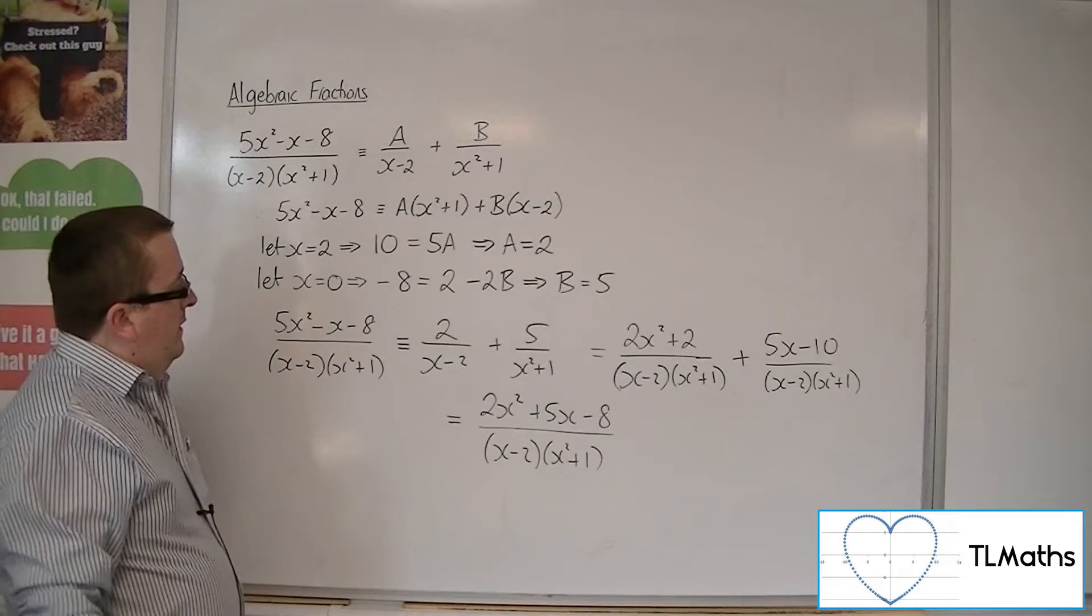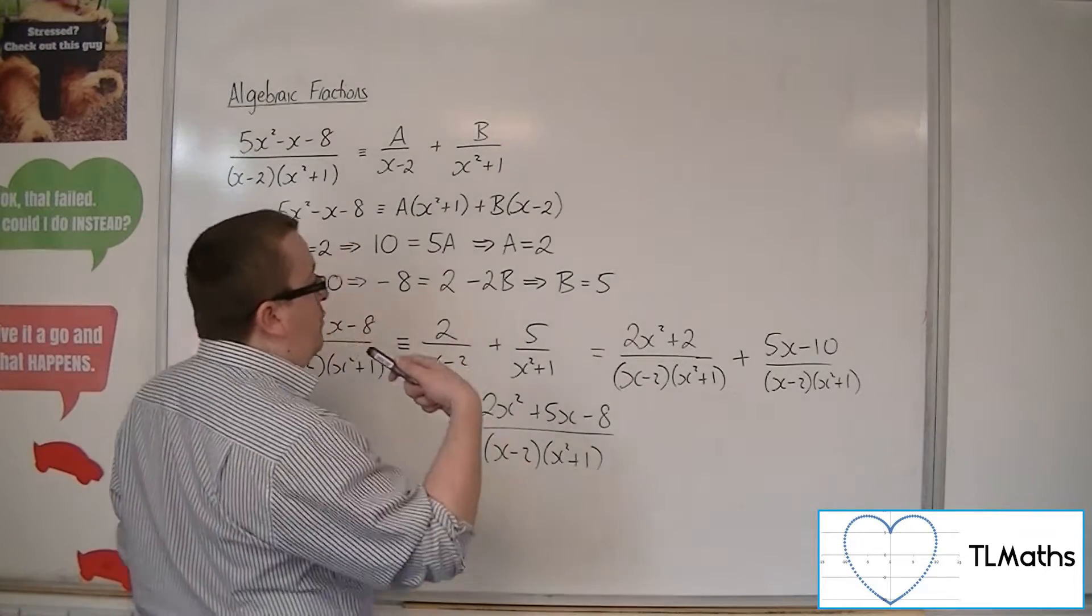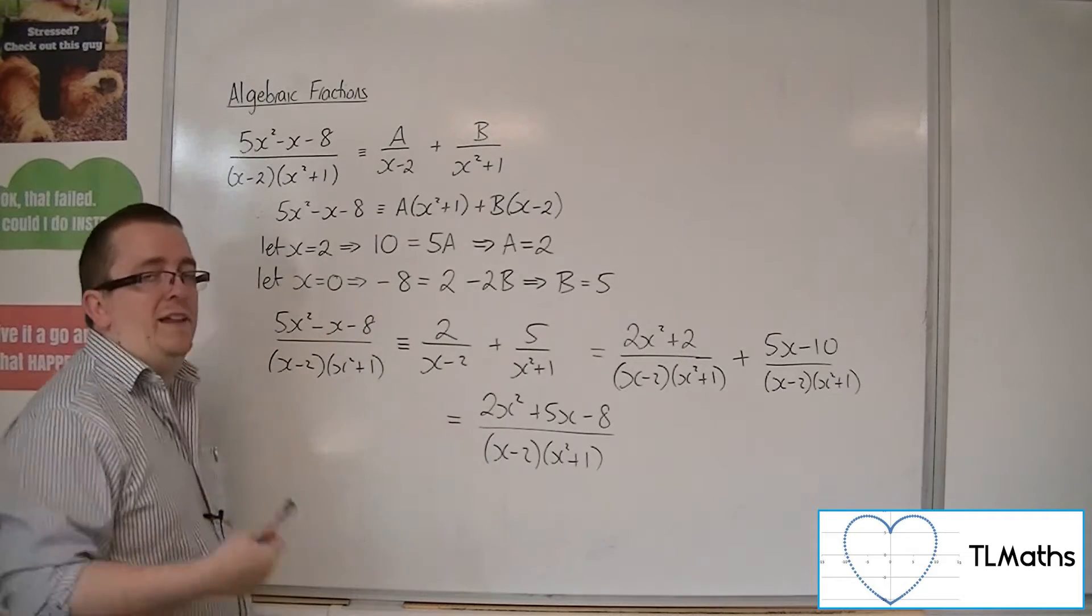Plus 5 lots of x minus 2, so 5x minus 10 over x minus 2 x squared plus 1. Now the denominator is the same. We can add the numerators, so 2x squared plus 5x minus 8 over x minus 2 x squared plus 1, which clearly isn't the same. So once again, there was nothing algebraically that was wrong. It was just that our assumption at the beginning has to be wrong.